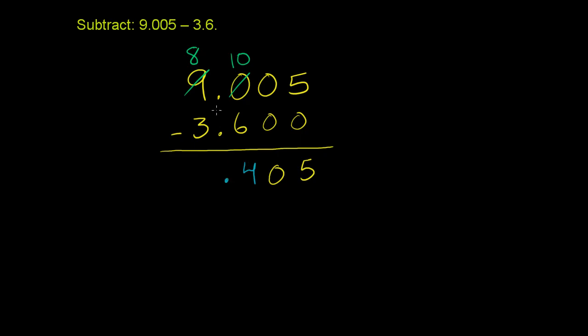And then you have 8 minus 3 is 5. So 9.005 minus 3.6 is 5.405.